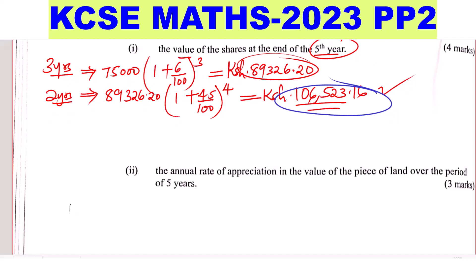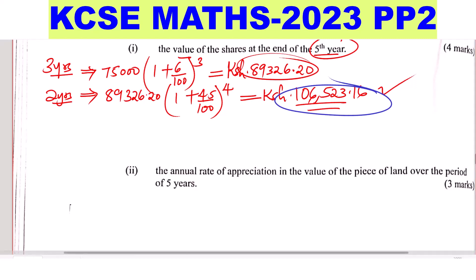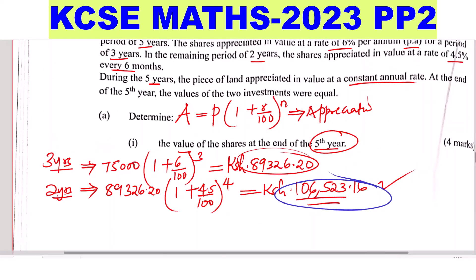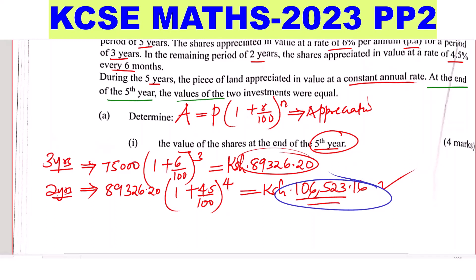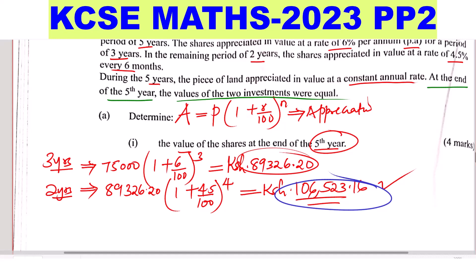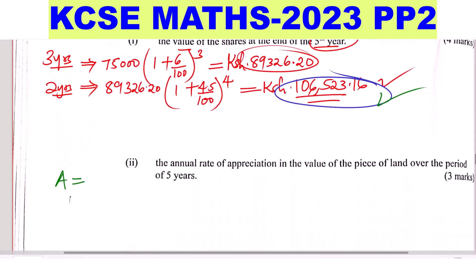Now for Part A, the annual rate of appreciation of the land over five years. The same amount of 75,000 was invested in the land over a period of five years. We don't know the rate, but we know the amount — because the values of the two investments are equal at the end of the fifth year, the land's value is also 106,523.16.